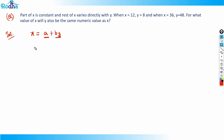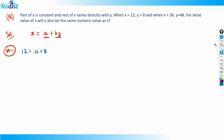Method one: using x = a + b·y. When x = 12 and y = 8, substituting gives the first equation: 12 = a + 8b.